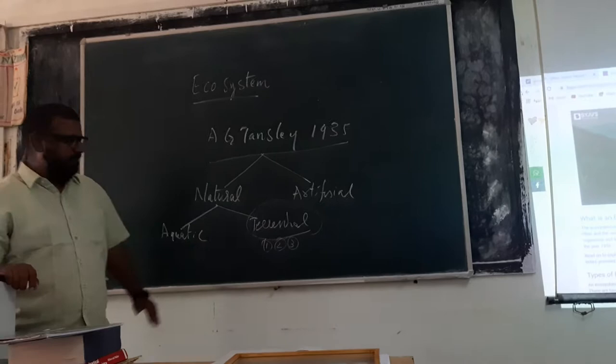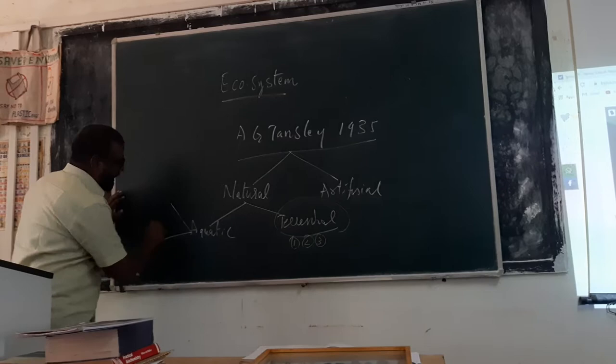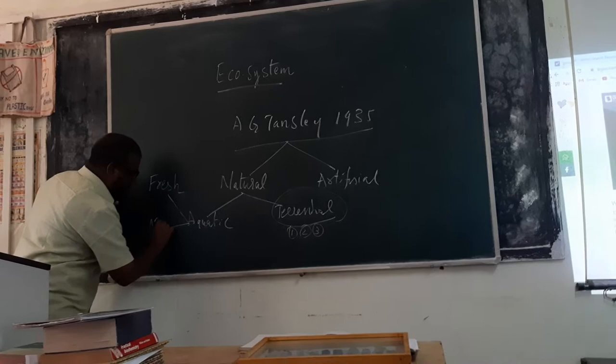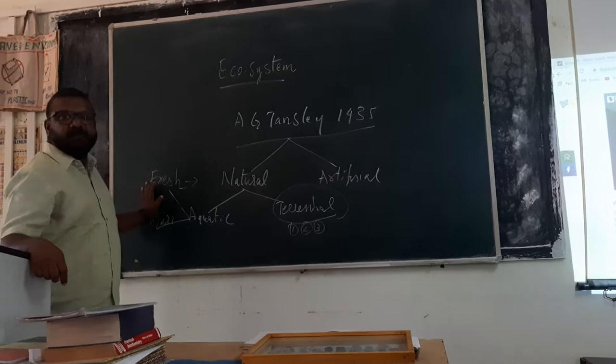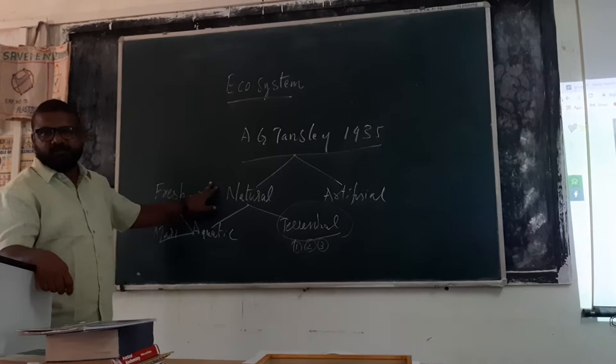Coming towards the aquatic ecosystem, this has been classified into majorly two types. One is called as fresh water ecosystem, another one is called as marine water ecosystem. The fresh water includes below 3% salt content in water bodies which are present in the globe. Those ecosystems are coming towards the fresh water ecosystem.